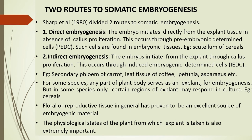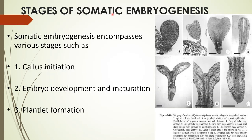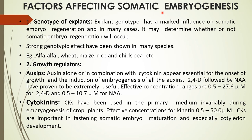Stages of somatic embryogenesis: somatic embryogenesis comprises various stages, including callus initiation, embryo development and maturation, and plantlet formation. Factors affecting somatic embryogenesis — genotype of explant: explant genotype has a marked influence on somatic embryo regeneration, and in many cases it may determine whether or not somatic embryo regeneration will occur. Strong genotypic effects have been shown in many species like alfalfa, wheat, maize, rice, and chickpea.